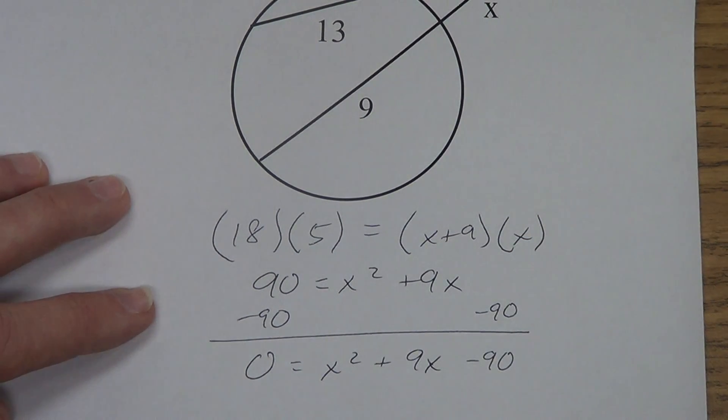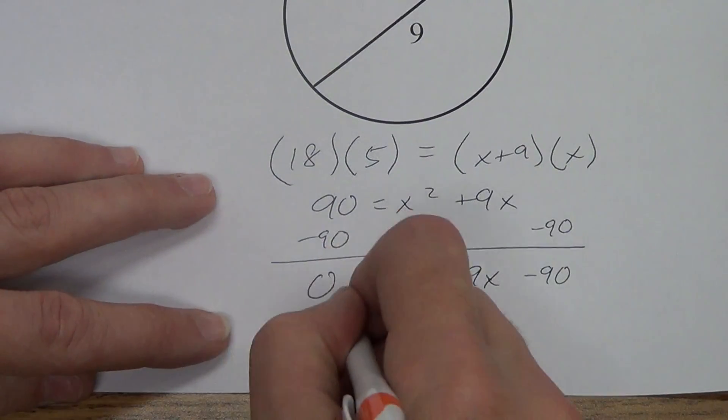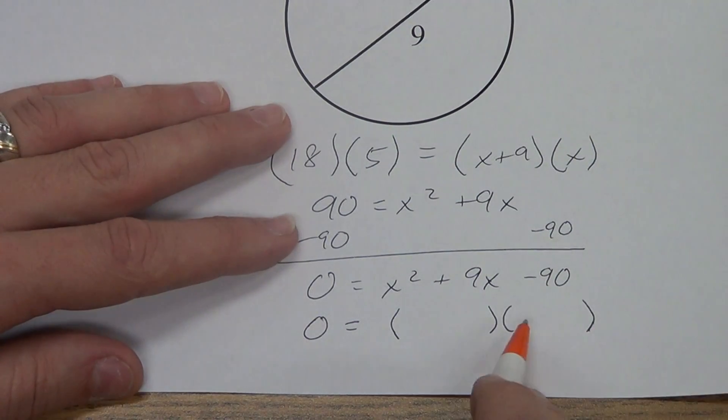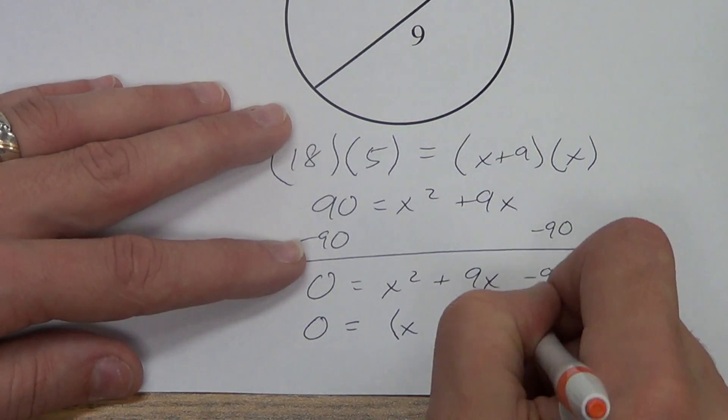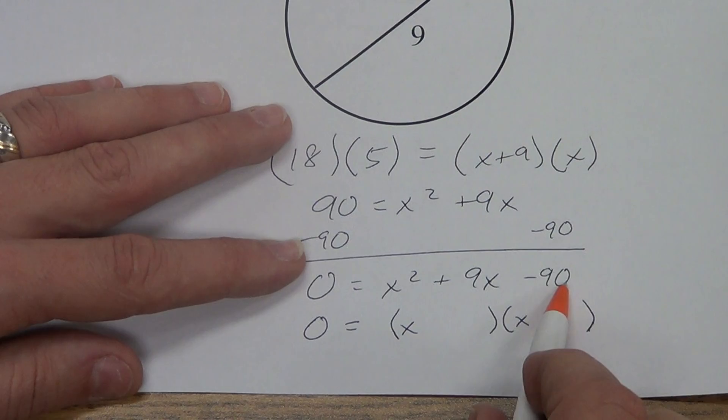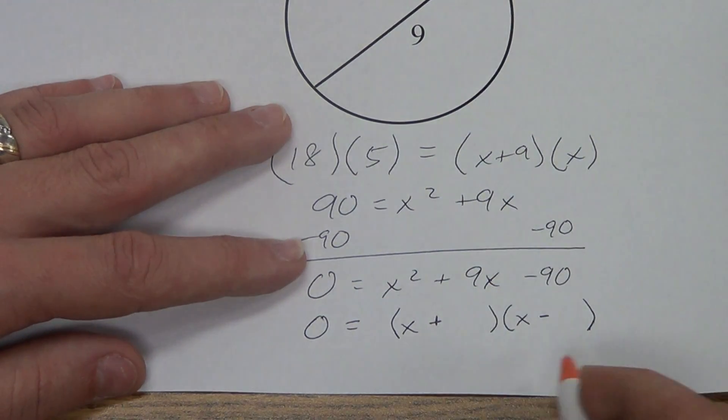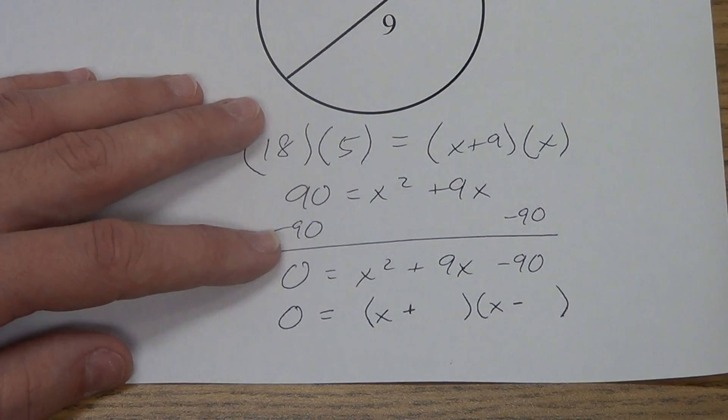Now, this is kind of like reverse foil. We have to factor. Hopefully, you guys remember this from algebra class. So, we have two separate parentheses. The two things that are at the beginning must multiply to give me x squared. So, that's definitely x times x. The things at the end must multiply to give me negative 90. Well, it's got to be a positive and a negative. They have to add to give me 9. So, we have to think of some numbers that multiply to give me 90 and subtract to give me 9.